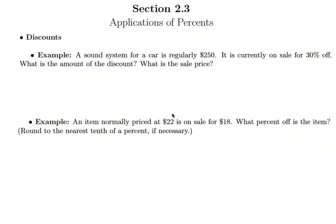In this video we're going to do a few examples that involve discounts. The first example says a sound system for a car is regularly $250. It is currently on sale for 30% off. What is the amount of the discount and what is the sale price?